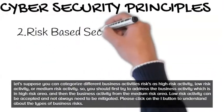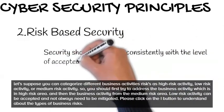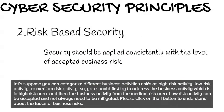2. Risk-based security. Security should be applied consistently with a level of accepted business risk. You can categorize different business activity risks as high risk, medium risk, or low risk. You should first try to address the business activity which is in a high risk area, then medium risk. Low risk activity can be accepted and does not always need to be mitigated. Please click on the I button to understand more about the types of business risks.